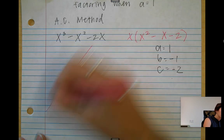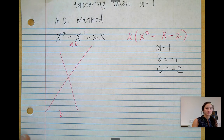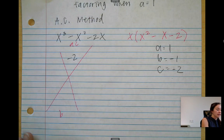We want to draw our x, AC on top, B on the bottom. My A times C is negative 2. My B is negative 1.